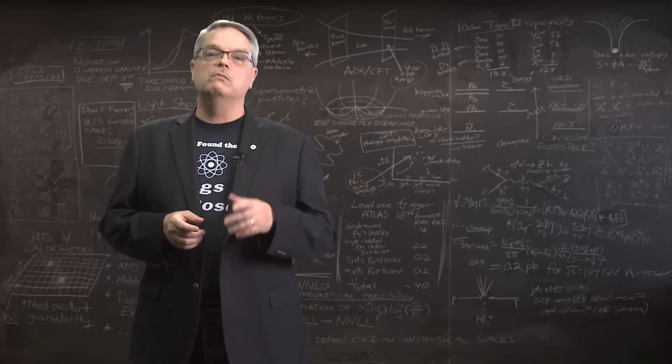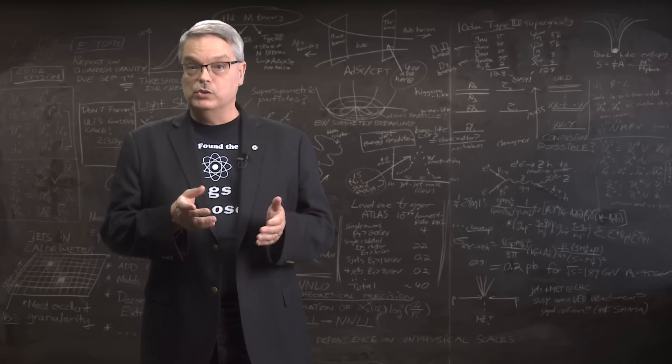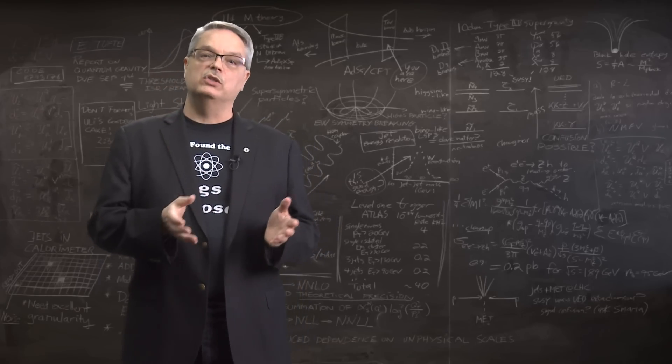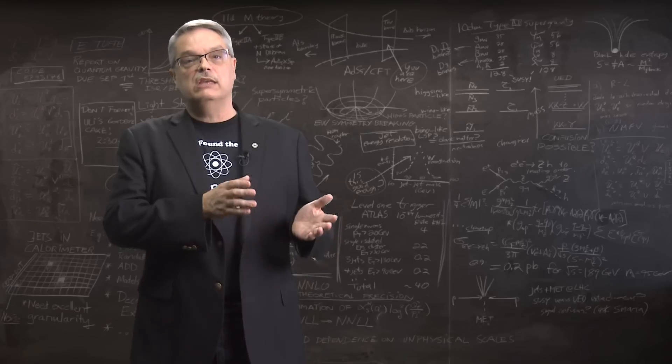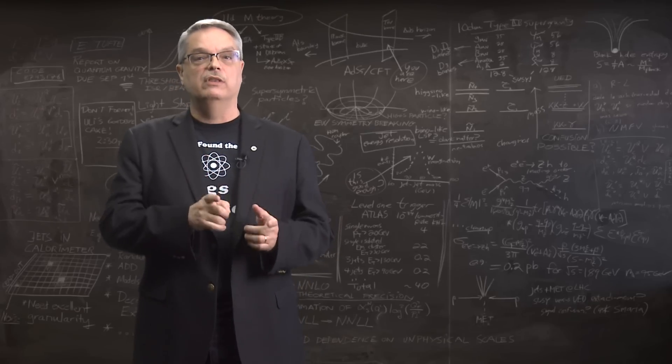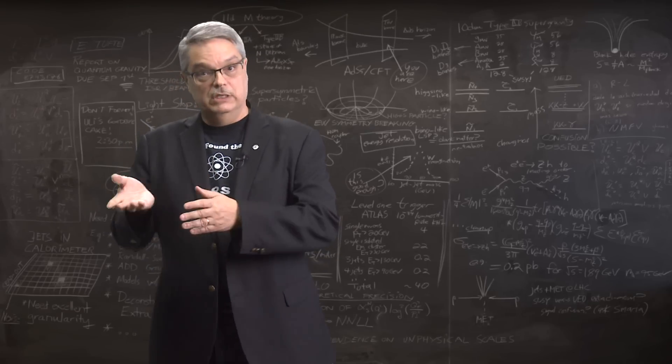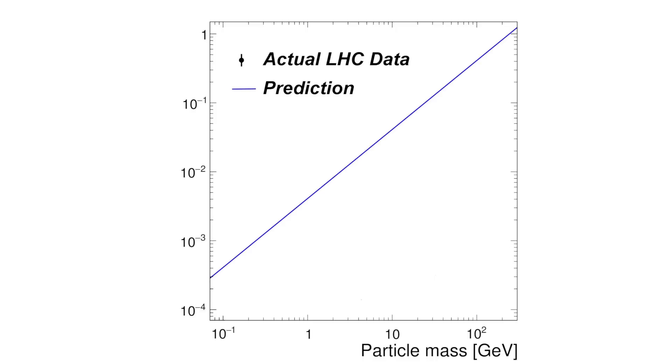If we assume that the mass of the fermions and bosons are both caused by their interaction with the Higgs field, we can use that theory to predict how often the Higgs bosons will decay into those particles. And the prediction is shown here on this graph. If the Higgs theory is right for both fermions and bosons, the data for each particle should appear exactly on this line. So let's take a look, shall we?